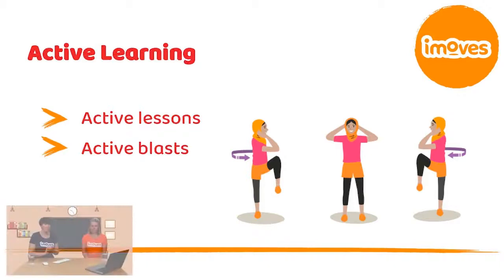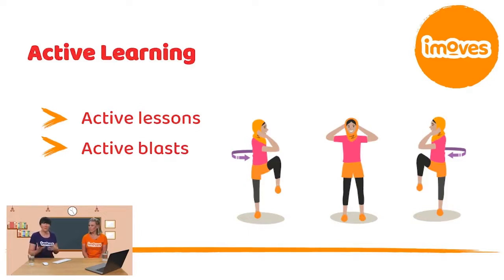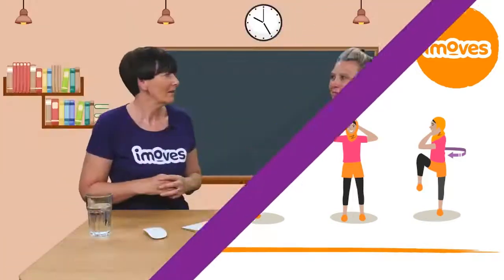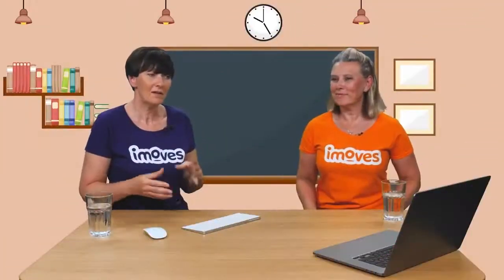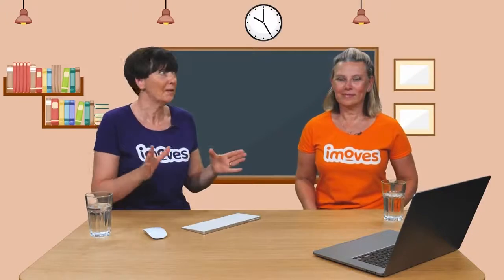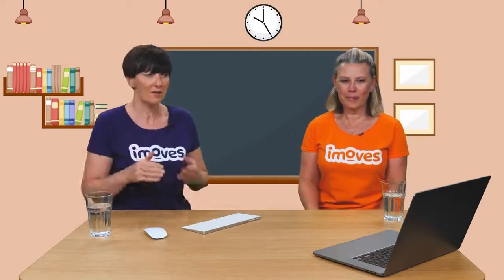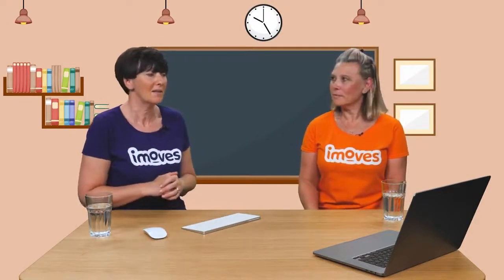There are two areas to active learning: your active lessons, and then the active blast, which you can literally slot in any time, any place, depending on where your kids are at. So if you see a room full of kids who've got brain fog and are sluggish and their behavior takes a dip, you can just slip in a quick active blast, refresh everything, and then get back down to business.